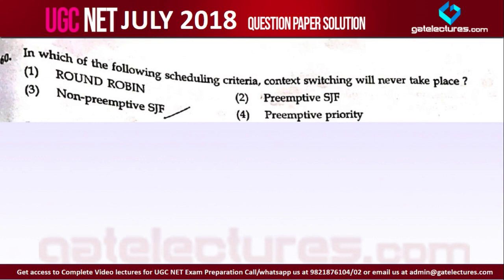Which means — actually, context switching will always take place if we have more than one process. And context switching will never take place if we have only one process, either preemptive or non-preemptive. So this question is actually ambiguous, but we can answer it according to the given data.